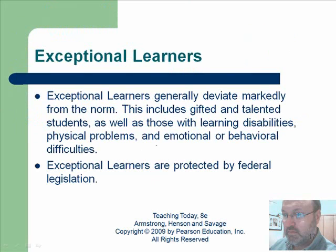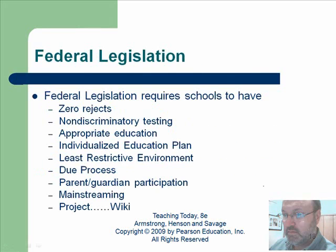Exceptional learners generally deviate markedly from the norm. They include gifted and talented students — a lot of times people don't realize gifted is also considered part of this group — as well as those with learning disabilities, physical problems, and emotional or behavior difficulties. These students are protected by federal legislation. They enjoy rights and privileges that others in the school do not, and federal law requires: zero rejects, non-discriminatory testing, appropriate education, individualized education plans, least restrictive environment, due process, and parent/guardian participation and mainstreaming.